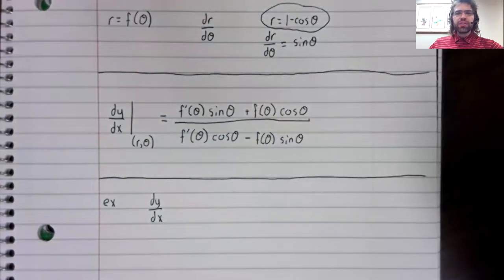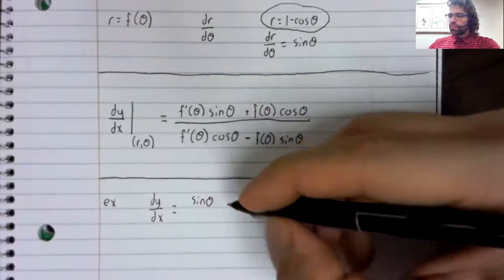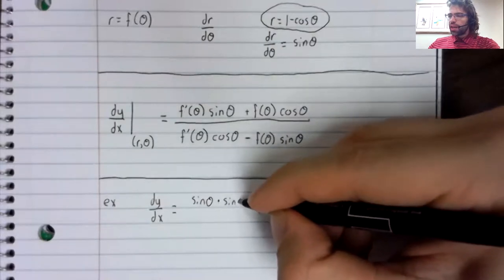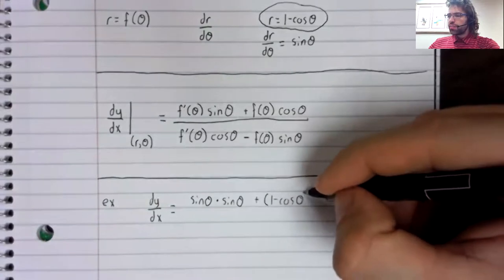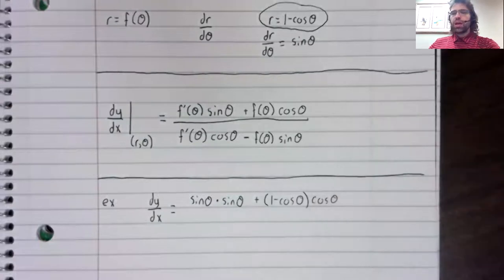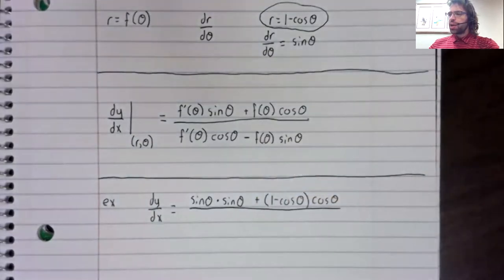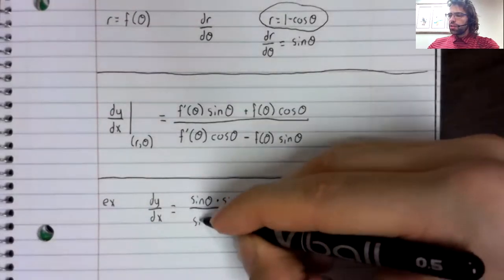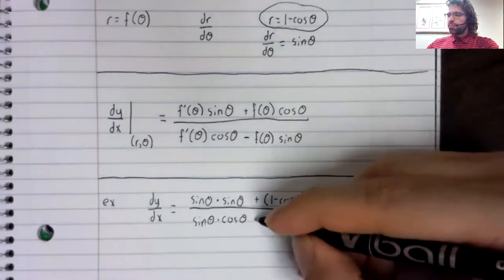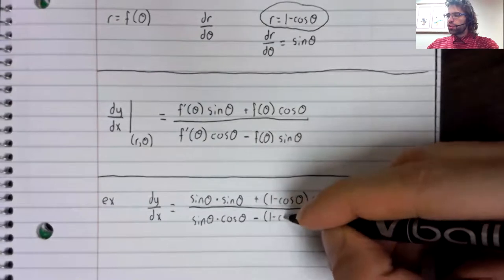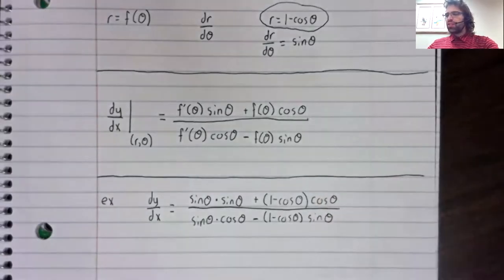dy/dx is the derivative times the sine plus the original function times the cosine, divided by the derivative times the cosine minus the original function times the sine.